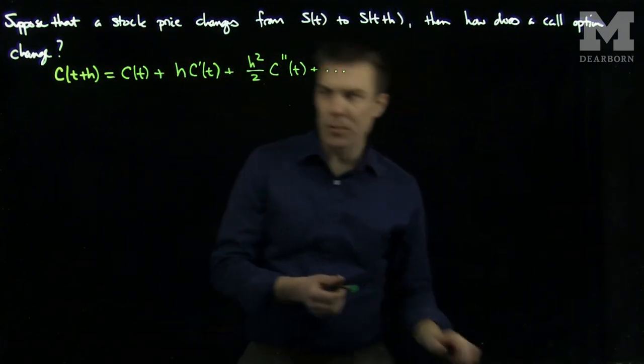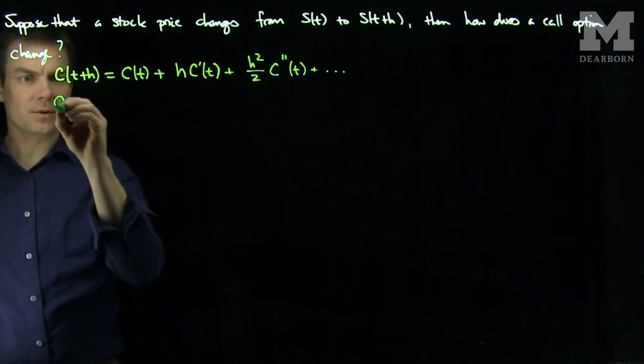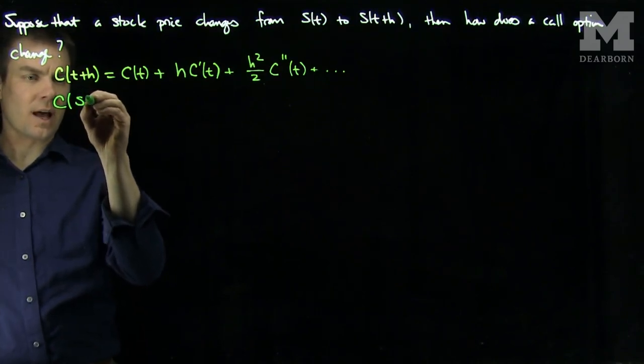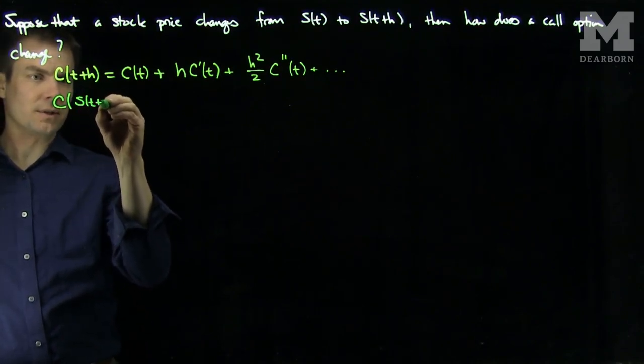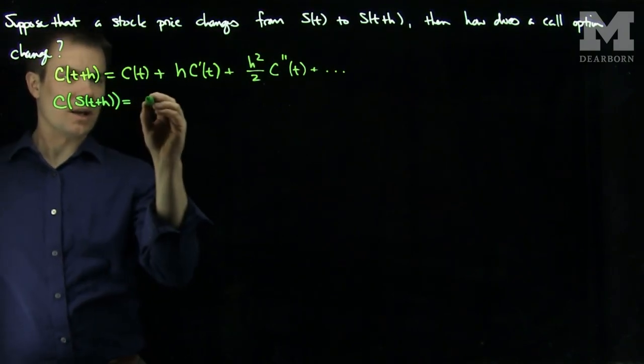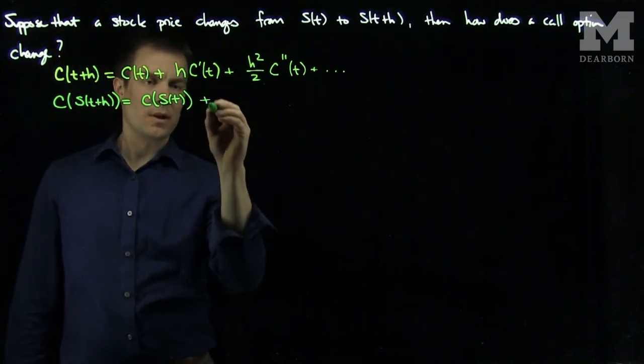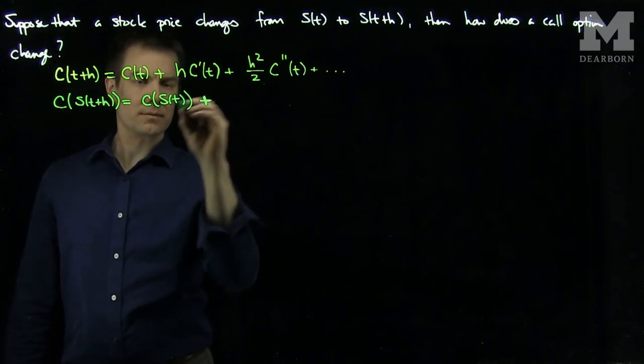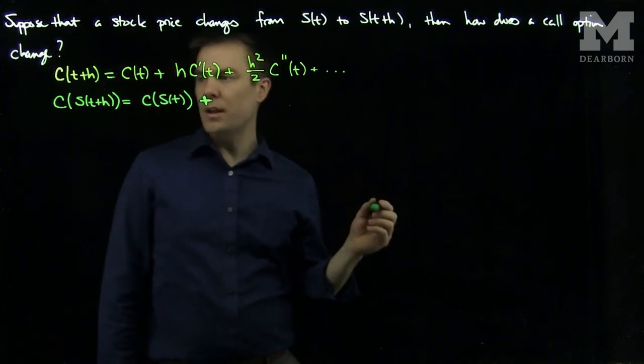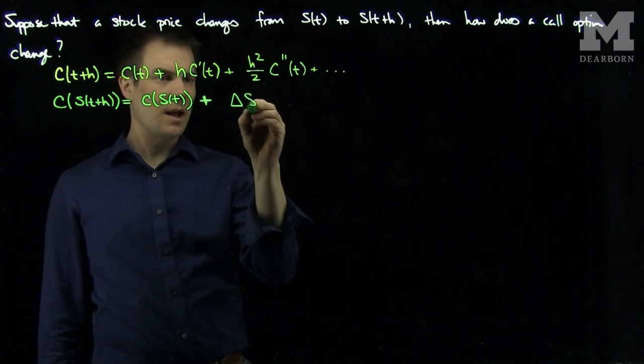So in this problem we can apply the Taylor formula with S instead of t, so C(S(t+h)). One stock price that's different is C(S(t)) plus the change in the stock price, so I'll put a ΔS over here, times ∂C/∂S.